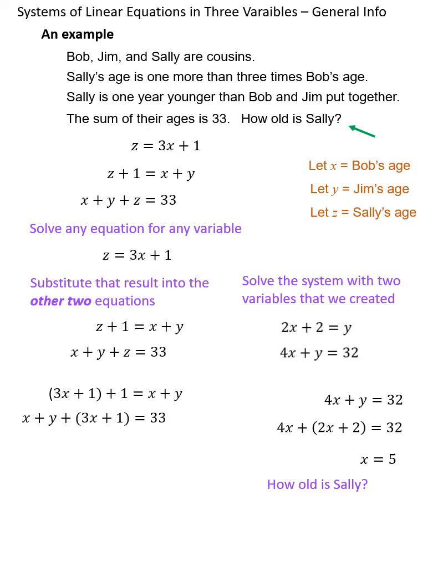Of course, the question is, how old is Sally? Remember, we arbitrarily chose z to represent Sally's age. And so I think all I need to use is the top equation, the very first equation from my original system. Because since it says z equals, and Sally's age is represented by z, then this equation is going to tell me exactly how old Sally is. Plugging in 5 for x, or Bob's age, ultimately gets me Sally's age, which is 16.